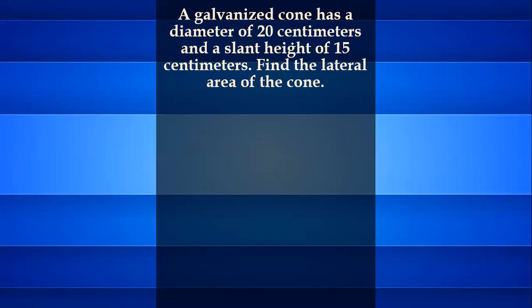A galvanized cone has a diameter of 20 cm and a slant height of 15 cm. Find the lateral area of the cone.